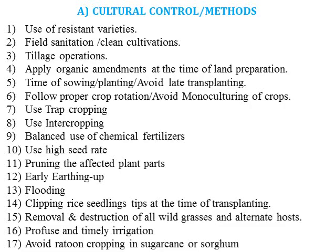Cultural control methods include the use of resistant varieties like BT cotton, which escapes the attack of bollworms. Deep ploughing and clean cultivation should be implemented before planting the crop. Tillage operations are very important. We should apply organic amendments at the time of land preparation to avoid pest attack and soil-borne pests. Time of sowing or planting should be adjusted to escape pest attack, and proper crop rotation should be followed, avoiding monoculture practices.